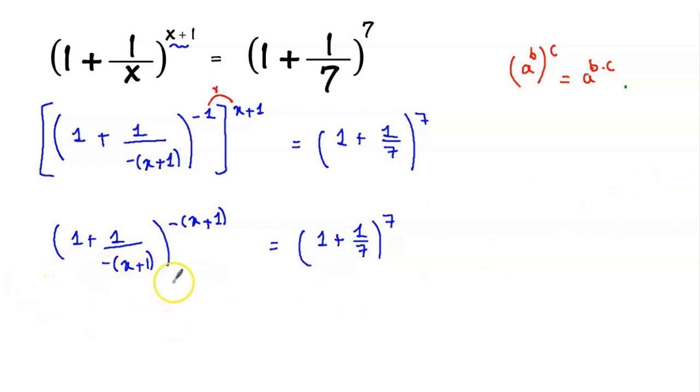Now, let's compare these two expressions. So we have 1 here and 1 here, same in the numerator. To the right, we have the denominator is the same as the power. And here, the denominator is the same as the power. So now we can easily say that minus x plus 1 equal to 7, same here.